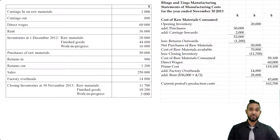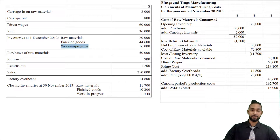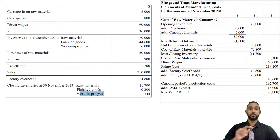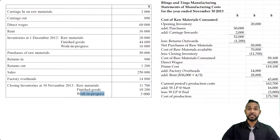That total is not yet the final cost of production because we need to adjust for work-in-process. Work-in-process refers to goods that were started but not completed. The opening balance of work-in-process is added because those costs were from a previous period and brought forward. The closing work-in-progress of 3,000 is deducted because those costs are transferred out to a future period when the goods will be completed. After doing the arithmetic, we get a cost of production of 175,700.